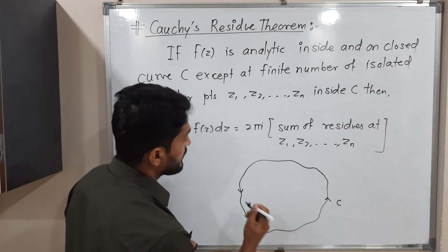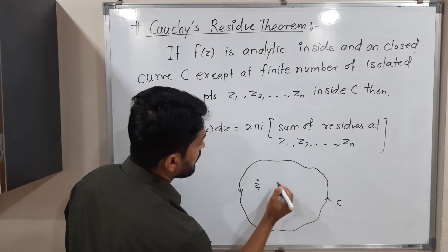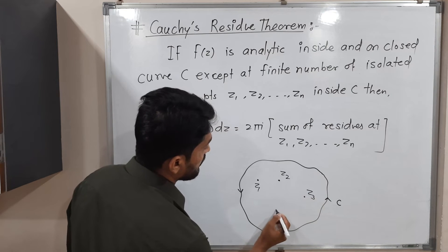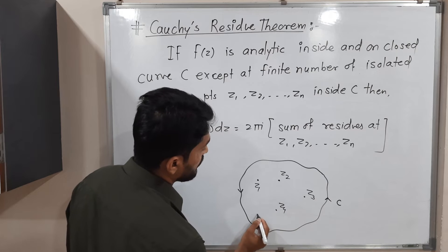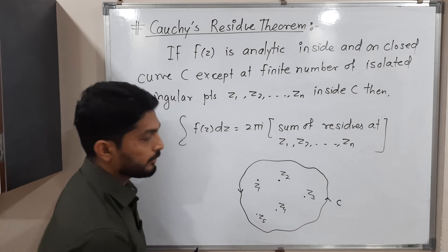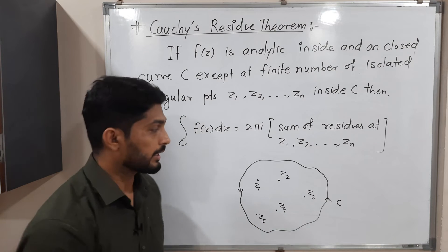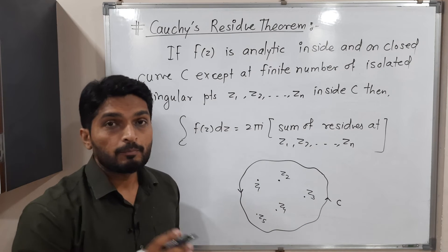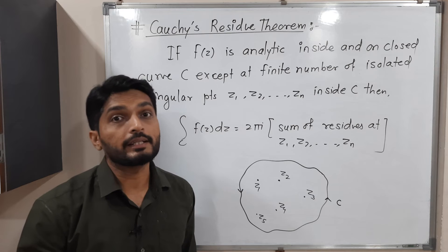Just like z1, z2, z3, z4, z5. The function is analytic everywhere except at these five points, for example. The number of those points should be finite; they